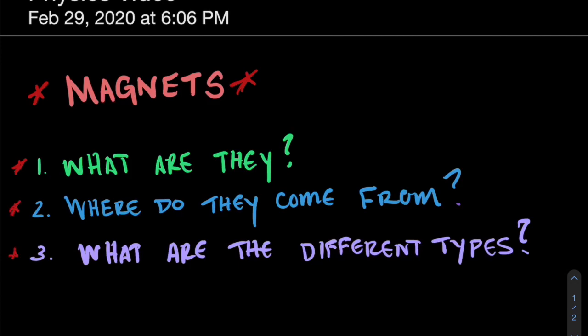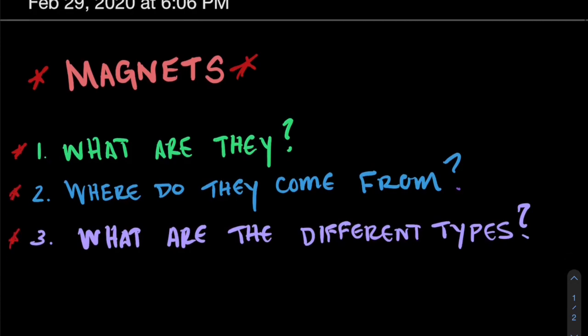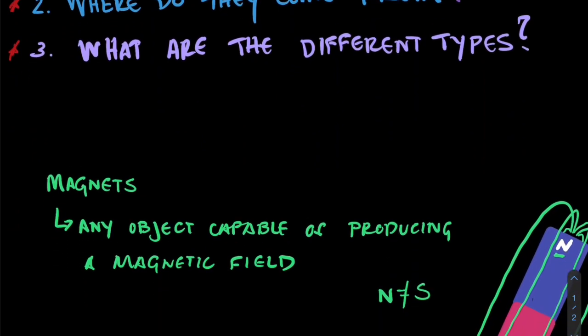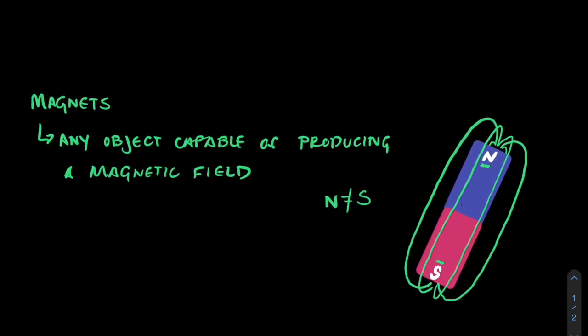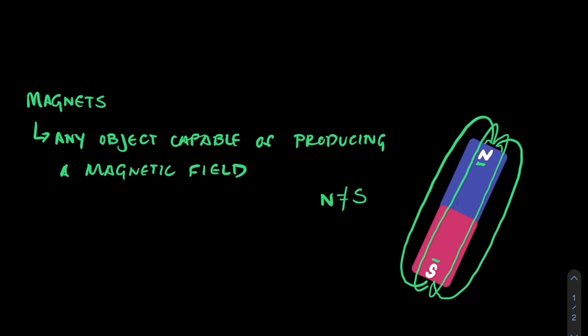Okay, so first, what are magnets? So magnets are any object capable of producing a magnetic field. Okay, so what does that really mean? It seems pretty vague. Well, all magnets have two poles. Here we have a north pole and here we have our south pole.